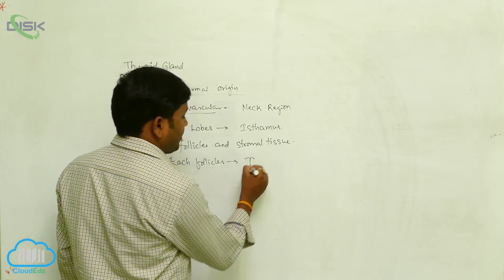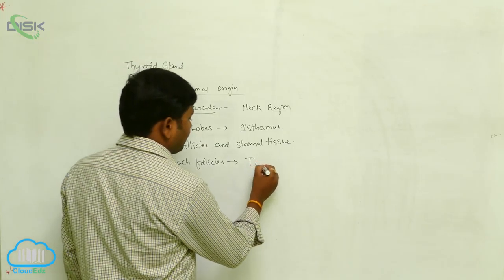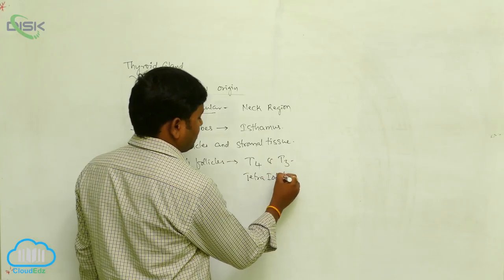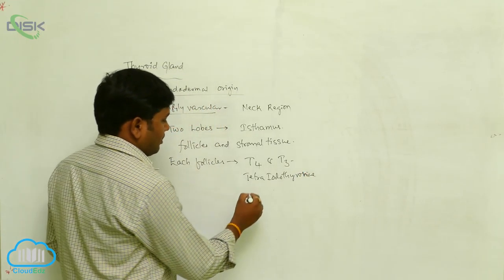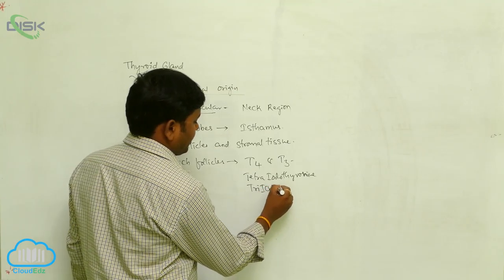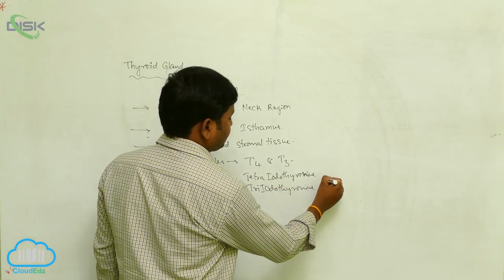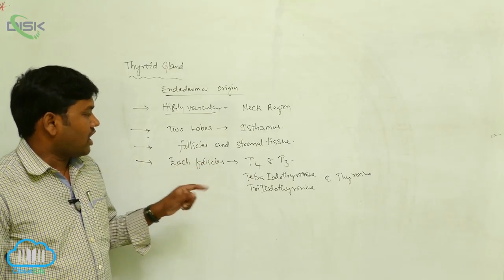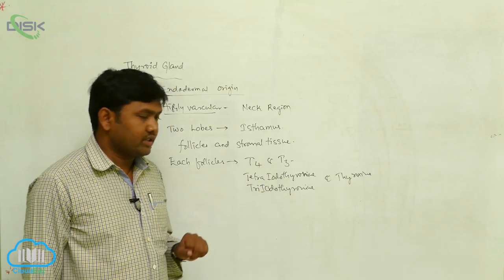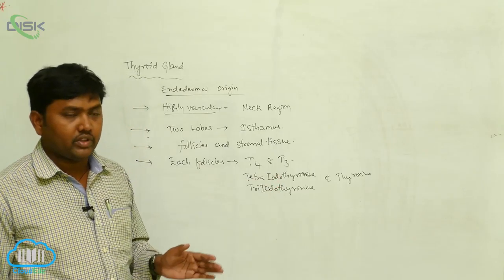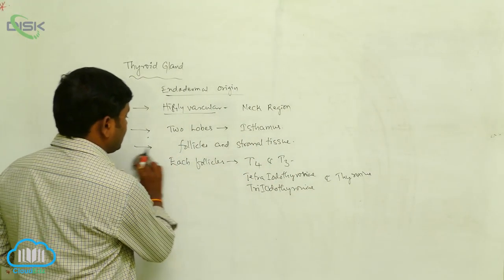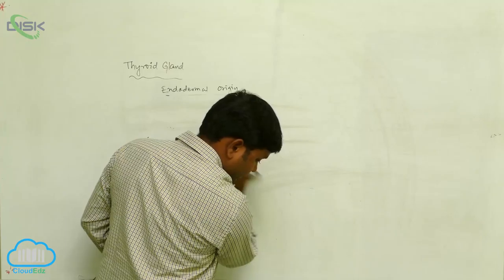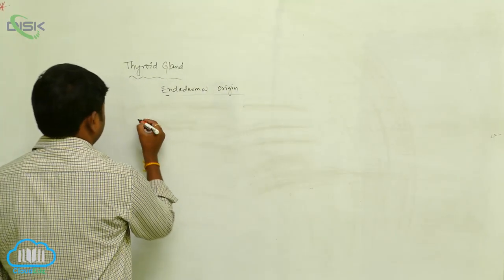Each follicle consists of an amorphous colloid which produces thyroid hormones. These hormones are T4 and T3 — T4 is tetraiodothyronine and T3 is triiodothyronine. Another hormone produced is thyroxine.